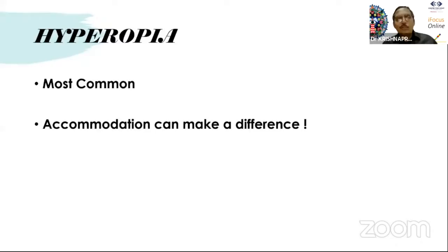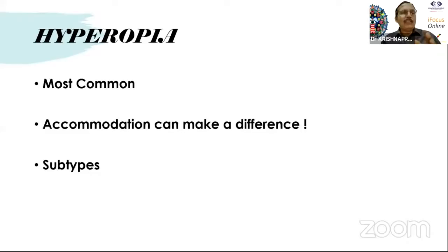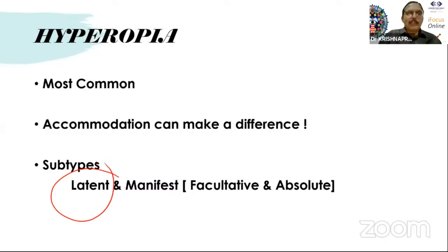In the outpatient department you mainly see myopia, even though hyperopia is more common in incidence. A patient says he has blurring but reads 6/6 N6 — how do we manage him? His accommodation is so hyperactive that if you give him plus 1 glasses subjectively, he says he can't see anything, because he's not relaxing accommodation. This leads to the two types: latent hypermetropia and manifest hypermetropia.